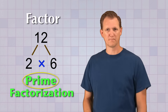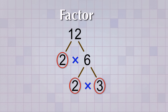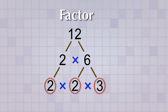So let's see if 2 and 6 are prime. Well, 2 is a prime number, but 6 is not, because 6 can be factored into 2 times 3. And both 2 and 3 are prime numbers, so now we're done factoring. If we bring down that 2 from the first factoring step, we can see that the prime factorization of 12 is 2 times 2 times 3.